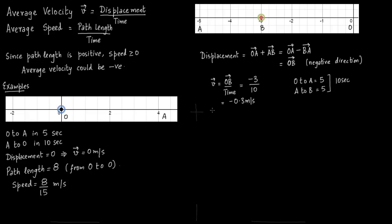What is the speed? Now obviously speed is always positive. So speed is given as path length over time.